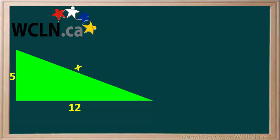Here is a triangle in which one leg is 5 units and the other leg is 12 units, but the length of the hypotenuse is unknown, so we'll call it x.